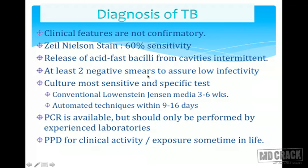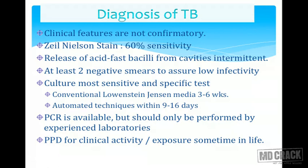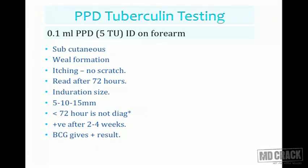At least two negative smears should assure low infectivity. Culture is more specific but takes a long time — the conventional medium is Löwenstein-Jensen medium, requiring three to six weeks. Automated techniques can produce culture results positive within nine to sixteen days. The best diagnosis is polymerase chain reaction (PCR), available but should be done only by experienced laboratories, as there is a high chance of false-negative or false-positive results with PCR techniques.